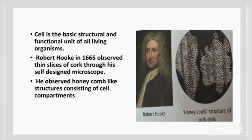The cell is a basic structural and functional unit of all living organisms. The existence of the cell was first discovered by the scientist Robert Hooke in 1665. He observed cells in thin slices of cork, which is the bark of a tree. He observed honeycomb-like structures consisting of little compartments, and that is why he named them 'cell,' which in Latin means 'a little room.' So Robert Hooke was the first one to establish the existence of the cell.